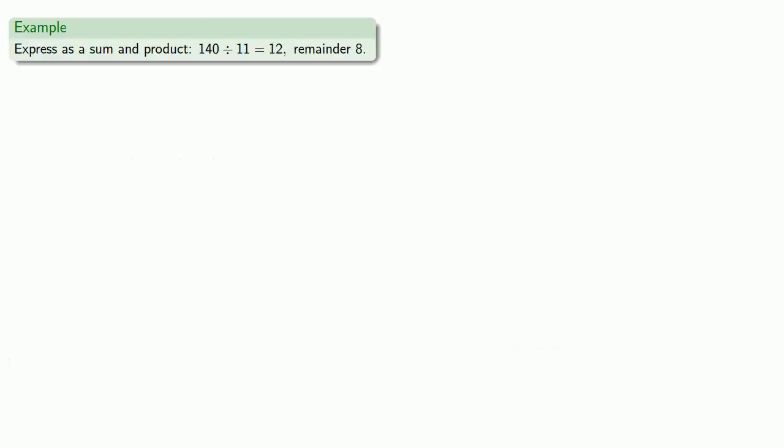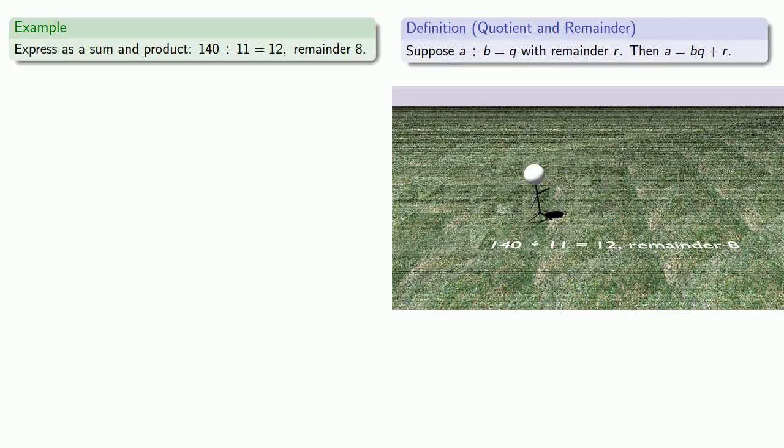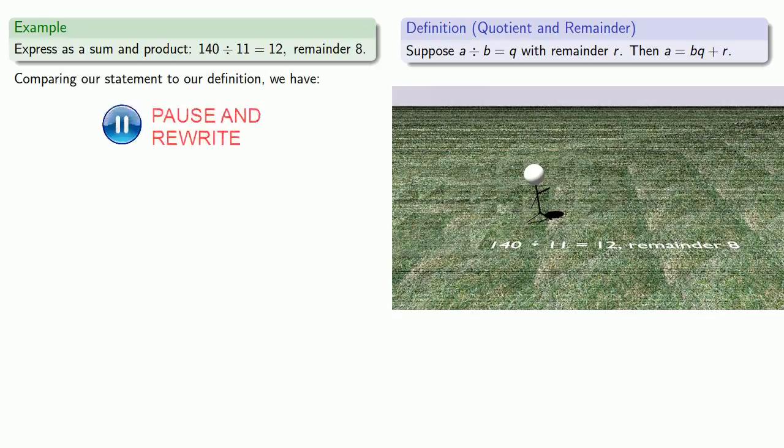For example, suppose you're out walking and out of the sky, 140 divided by 11 equals 12 with remainder 8 falls and hits you on the head. Because you know the definition of a division with quotient and remainder, you can immediately rewrite this as a sum and product. So comparing our statement to our definition, we can say that 140 is 11 times 12 plus 8.